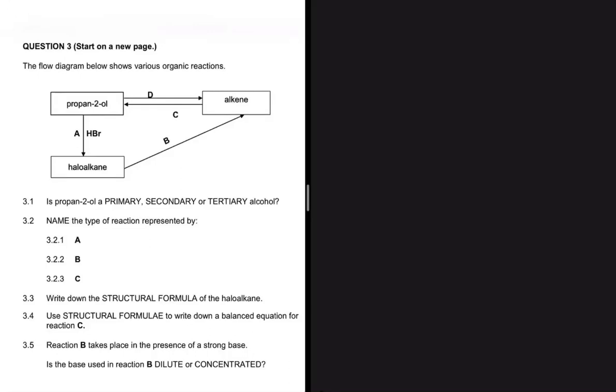Is propane-2-ol a primary, secondary, or tertiary alcohol? Let's go ahead and draw the structure so that we can be able to tell. So we have prop, we know we need three carbons.